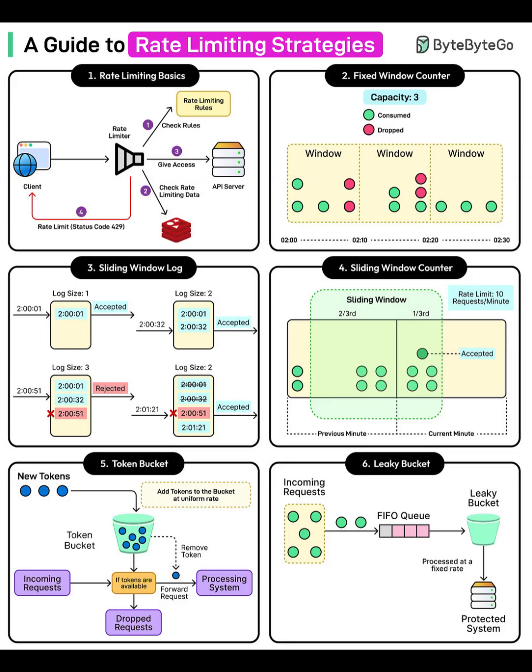Fixed window counter. Imagine buckets of one-minute windows. Each window has a capacity, say three requests. Any requests beyond that in the same one-minute slot get dropped. Simple to implement, but can cause bursts at window boundaries.